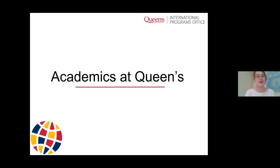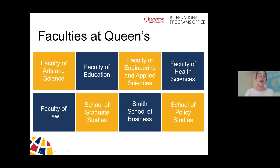Now we want to shift gears and move into talking about academics specifically at Queen's, particularly in the Faculty of Arts and Science. The goal of this section is to give you the foundational knowledge that will assist you in actually selecting courses, which will be happening in November. Let's start with a broad overview of the faculties that we offer here at Queen's — these are the main academic units, within which there are many departments or divisions.